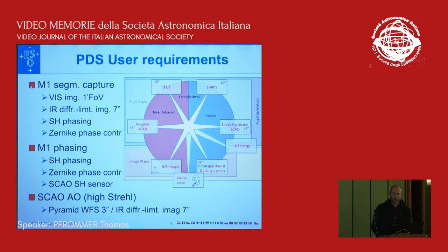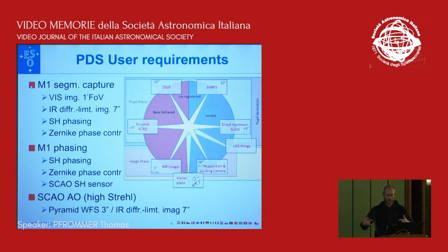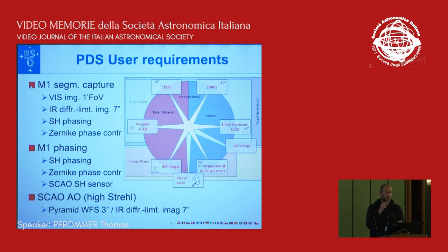The user requirements can be summarized in this very nice plot from Henri, where we have in green the pupil plane and in yellow the image plane. We have visible and infrared on left and right. That means we will try to have as much parameter space as possible in terms of imaging, wavefront sensing, and going towards high order — to have a toolset that will help us with whatever we see on the telescope, to be as best prepared as possible.